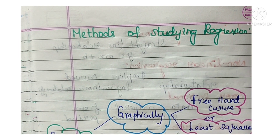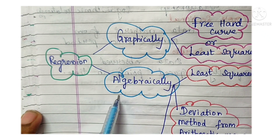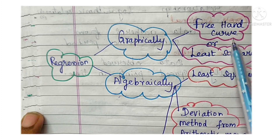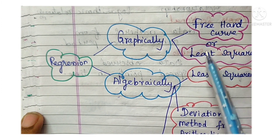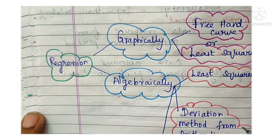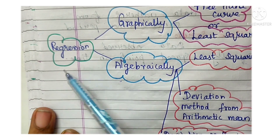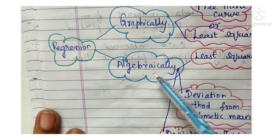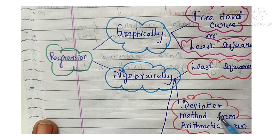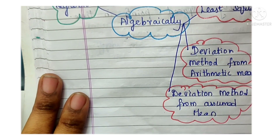Methods of studying regression: Regression can be studied either graphically or algebraically. Graphically means using a free-hand curve or a least-squares curve. Algebraically means using formulas — specifically the least-squares deviation method from arithmetic mean, or the deviation method from assumed mean.